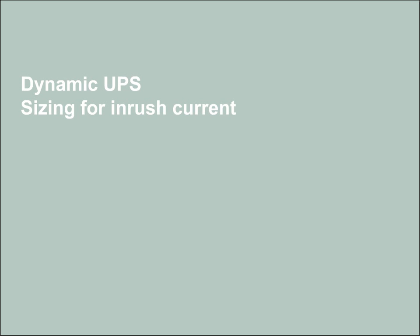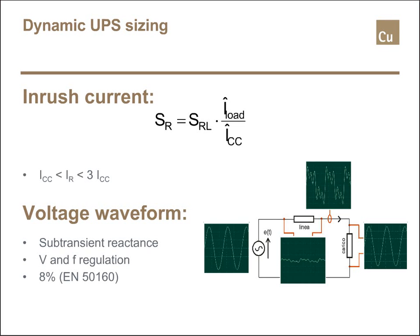Conclusion: pay attention to the inrush current, and if needed, increase the power of the UPS to be able to provide the requested inrush current. Now let's spend a few minutes on the same issue for dynamic UPS. More or less, the problem is still the same — loads require quite high inrush current, and the UPS is not able to provide any kind of transient current beyond its limits.